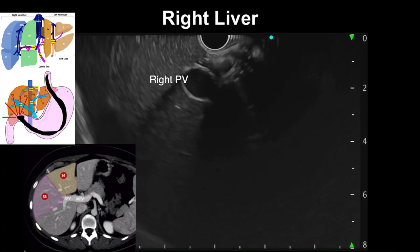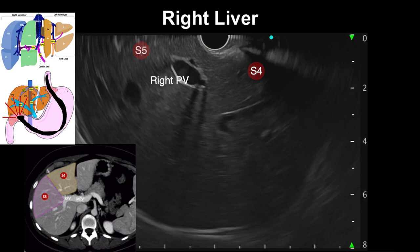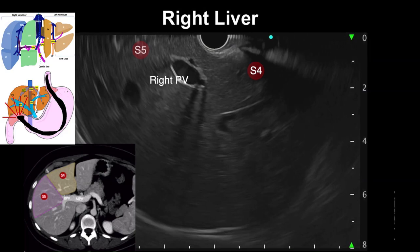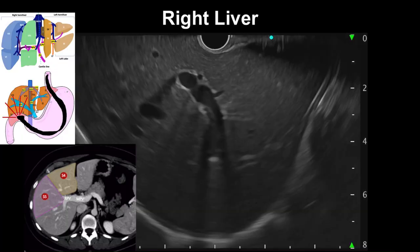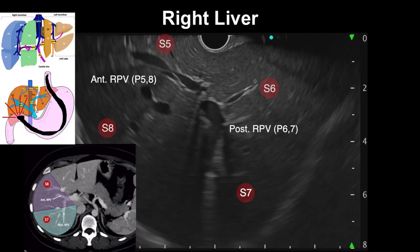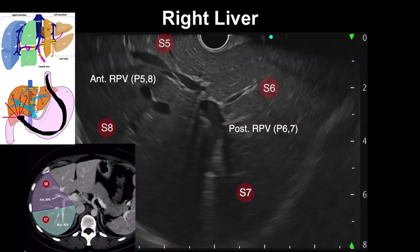Rotating the scope counterclockwise and releasing the big knob down, the right portal vein can be traced until segment 4 is seen on the right part of the screen and segment 5 on the left side. Applying a slightly further counterclockwise rotation and keeping the tip of the scope in contact with the duodenal wall, the right portal vein can be traced until it branches into the right anterior and right posterior branches. The right anterior portal vein serves segment 5 closer to the transducer and segment 8 in the lower left part of the screen. The right posterior portal vein serves segment 6 closer to the transducer and segment 7 in the lower right part of the screen.